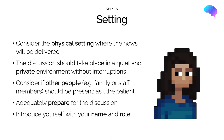The first stage in SPIKES is setting up the consultation. It's important to consider the physical setting where the news will be delivered. Ideally, the discussion should occur in a comfortable, quiet and private room. Ensure you are uninterrupted, for example by switching off your phone or pager. Bad news should never be broken in a busy hospital corridor with constant interruptions. It may be helpful to have other people present, such as a specialist nurse or one of the ward nurses. You should ask the patient if they wish for any friends or family to be present. You should also familiarise yourself with the patient's history, including any relevant test results and ongoing management.